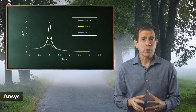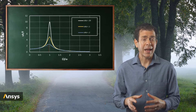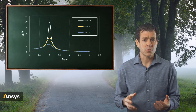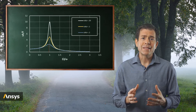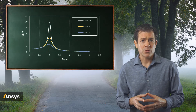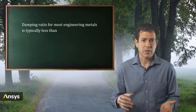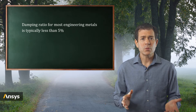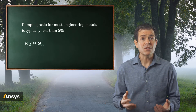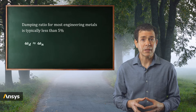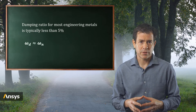One comment on zeta 0.2: this is actually a high damping ratio and it may be present for some elastomers or rubbers, but the damping ratio of most engineered metals is typically less than 0.05, or 5% or less. So the difference between the damped natural frequency and the natural frequency at these lower damping levels is a fraction of a percent and typically is not significant.